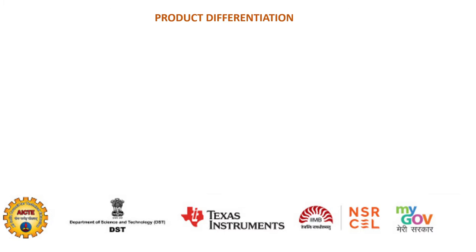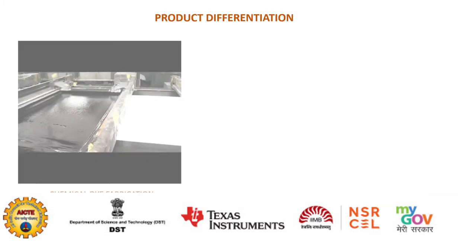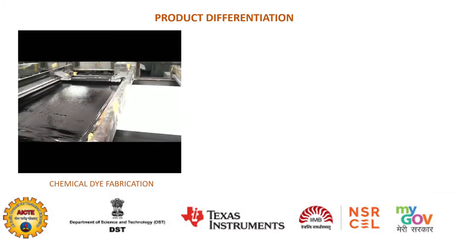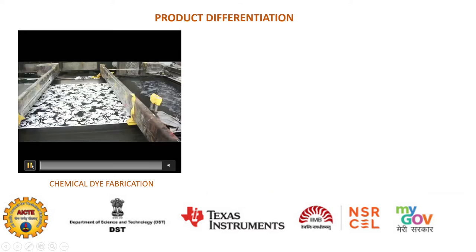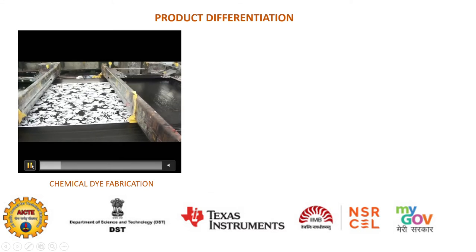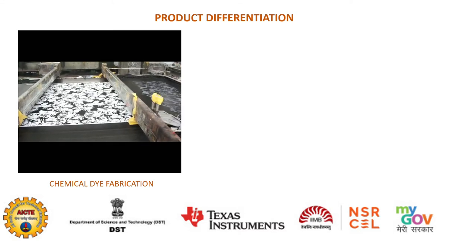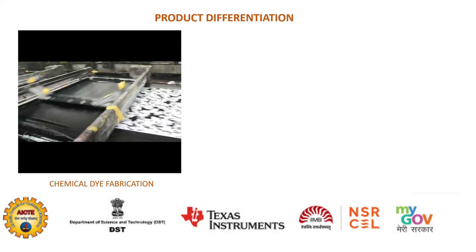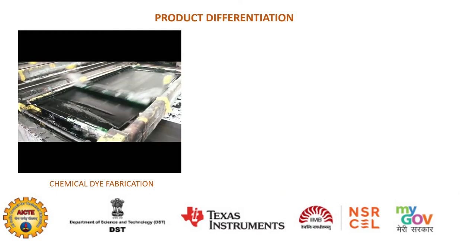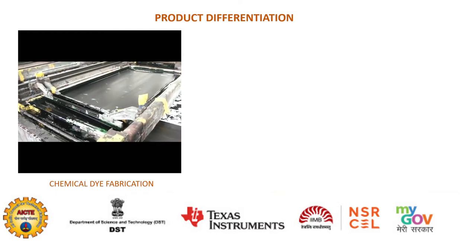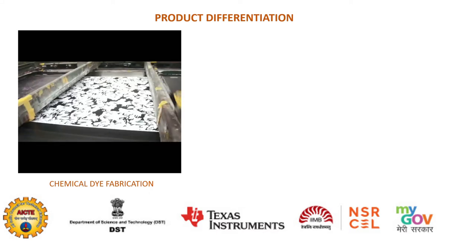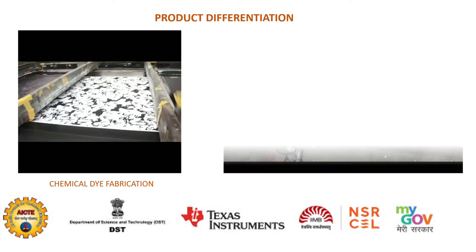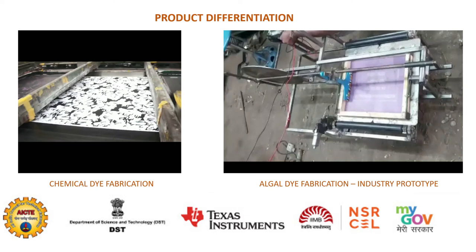In product differentiation, we are differentiating two dyeing processes — the conventional chemical dyeing process and the algal dyeing printing industry. The prototype developed by our team is exhibited here.